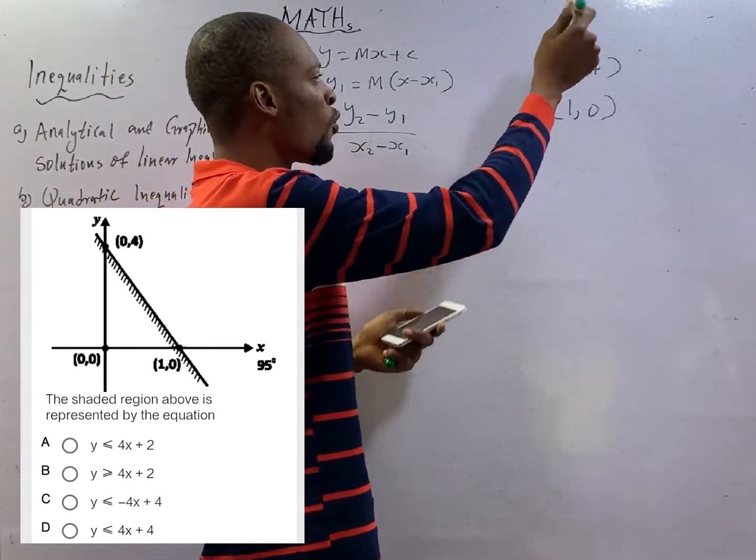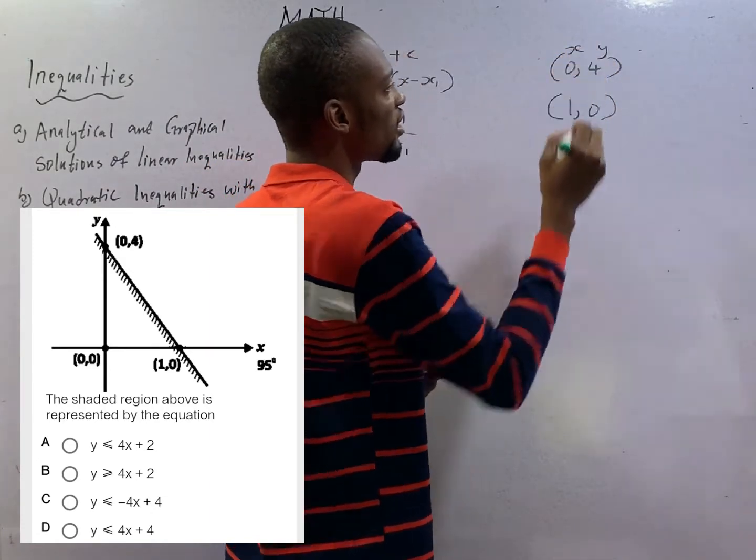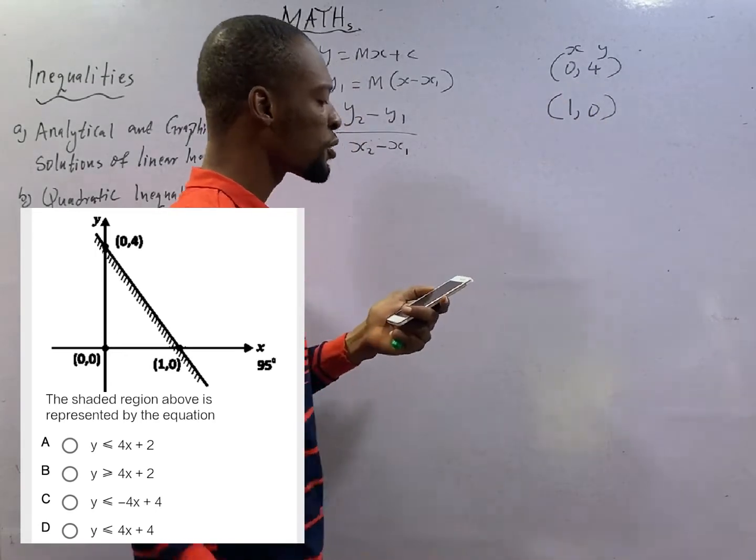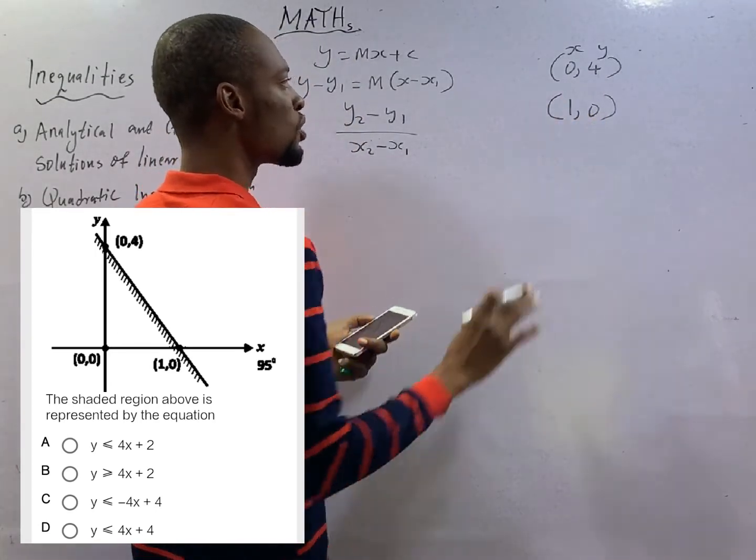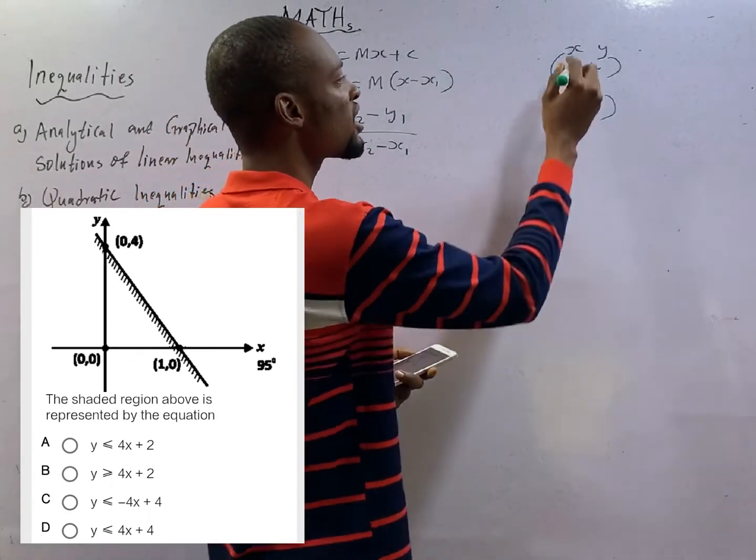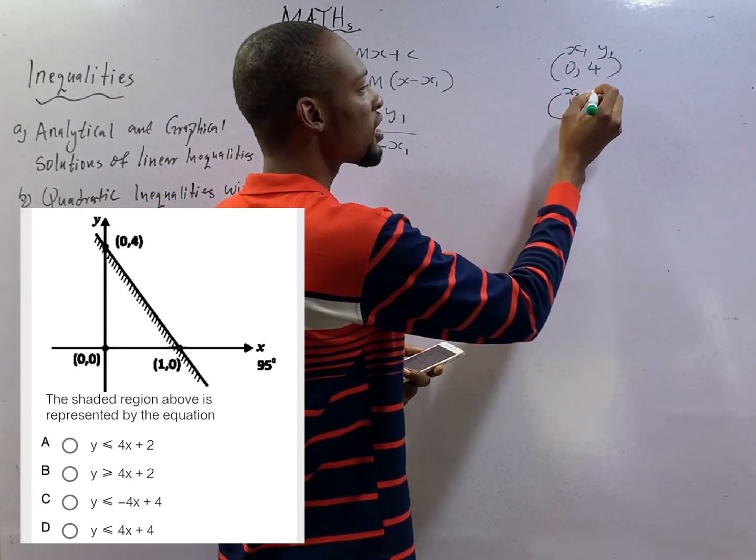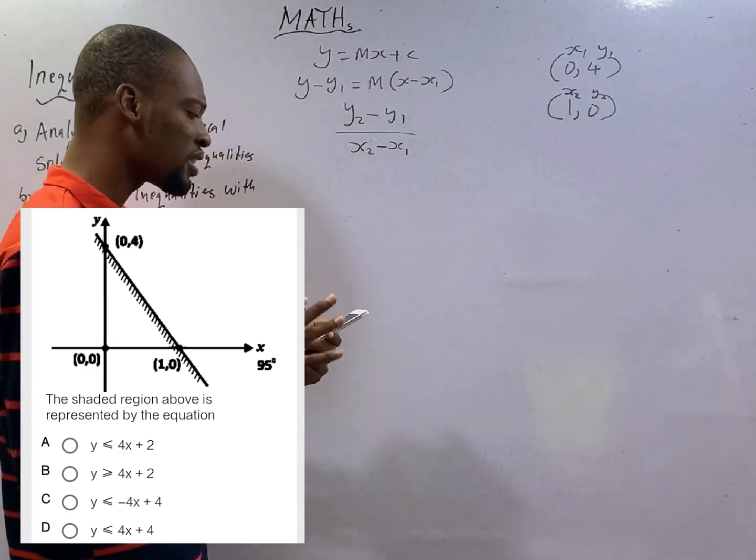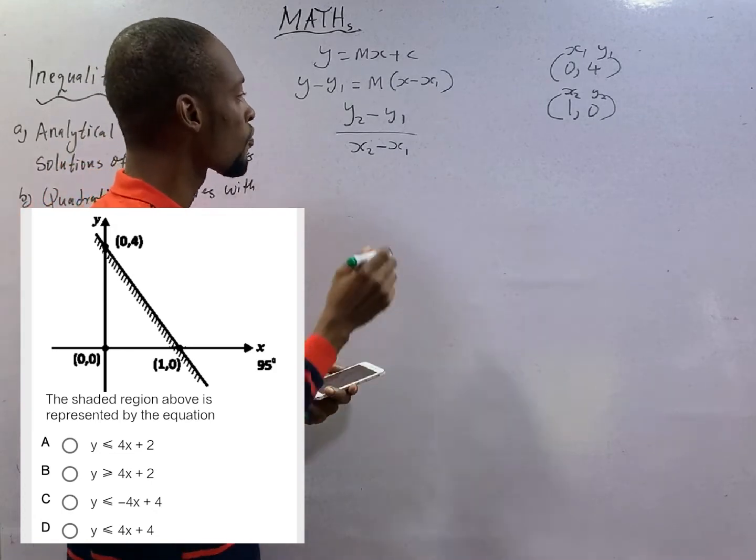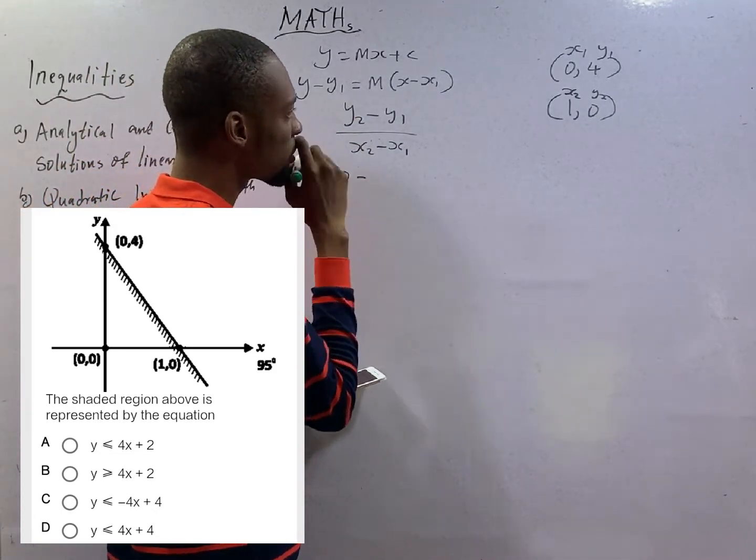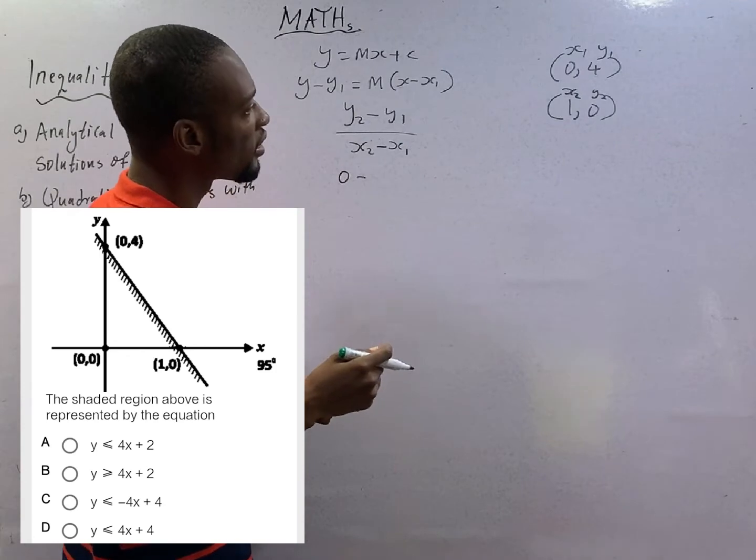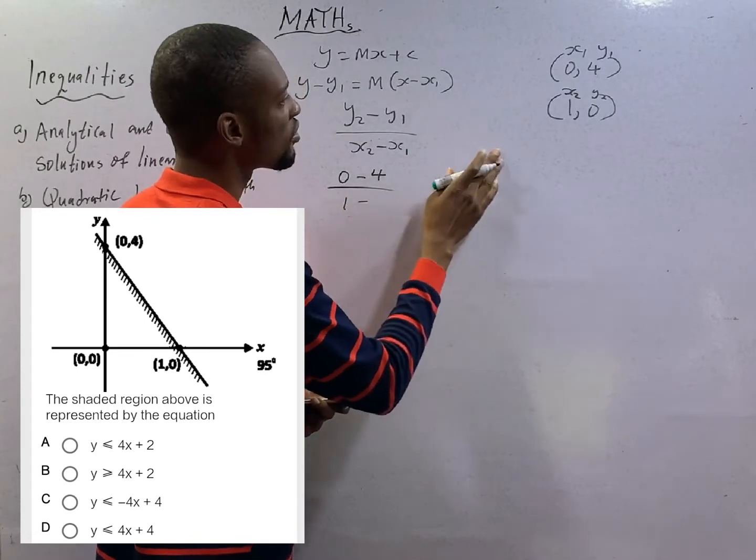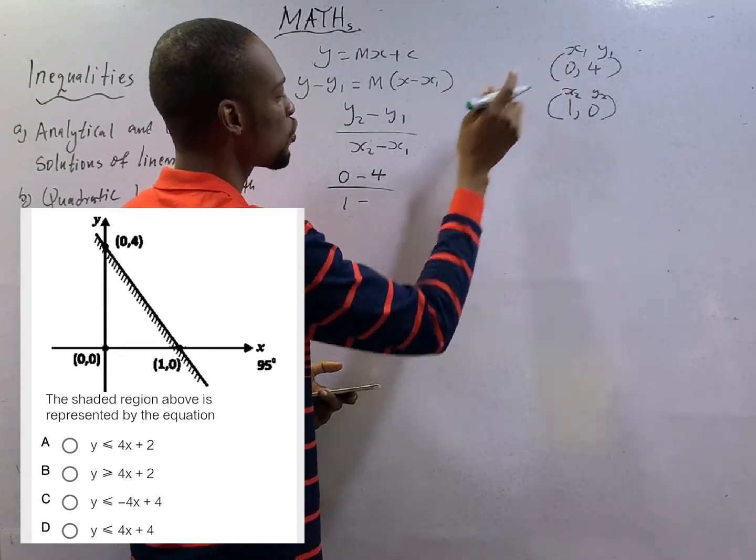For the first one, this is x and this is y. x is 0 and y = 4. For the bottom, x is 1 and y = 0. So let's call this (x1, y1) and let's call this (x2, y2). If that is correct, the slope of this inequality will simply be y2, that is 0, minus y1, 4, over x2, 1, minus x1, 0.